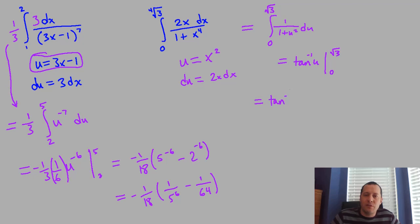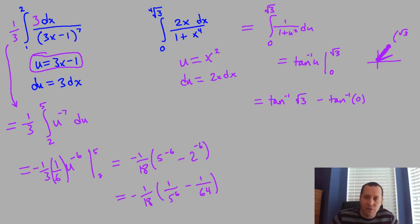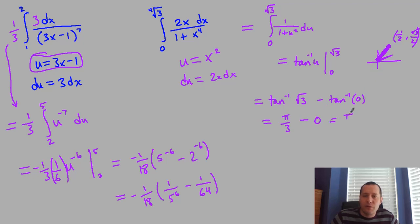This is the derivative of arctan of u, so the antiderivative is inverse tangent of u, evaluated from 0 to √3. We get arctan(√3) minus arctan(0). On the unit circle, the angle whose tangent is √3 is π/3—the coordinates are (1/2, √3/2), and tangent equals y/x = √3. So arctan(√3) = π/3, and arctan(0) = 0. The answer is π/3.